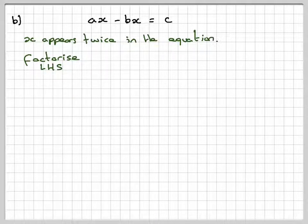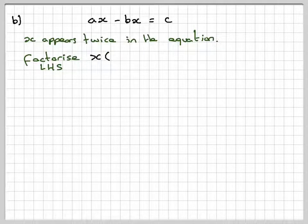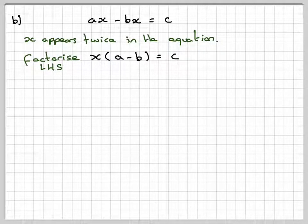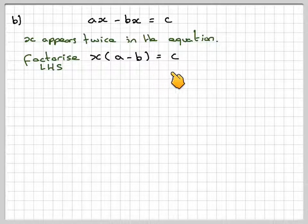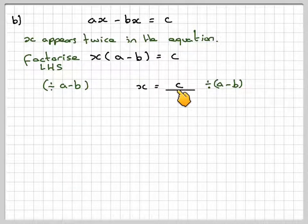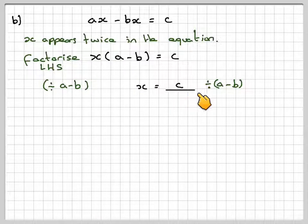The common factor is x, and we're left with a minus b. We've still got c on the other side, so x times a minus b is equal to c. The opposite of multiplying by a minus b is to divide by a minus b. Therefore, x is equal to c over a minus b.